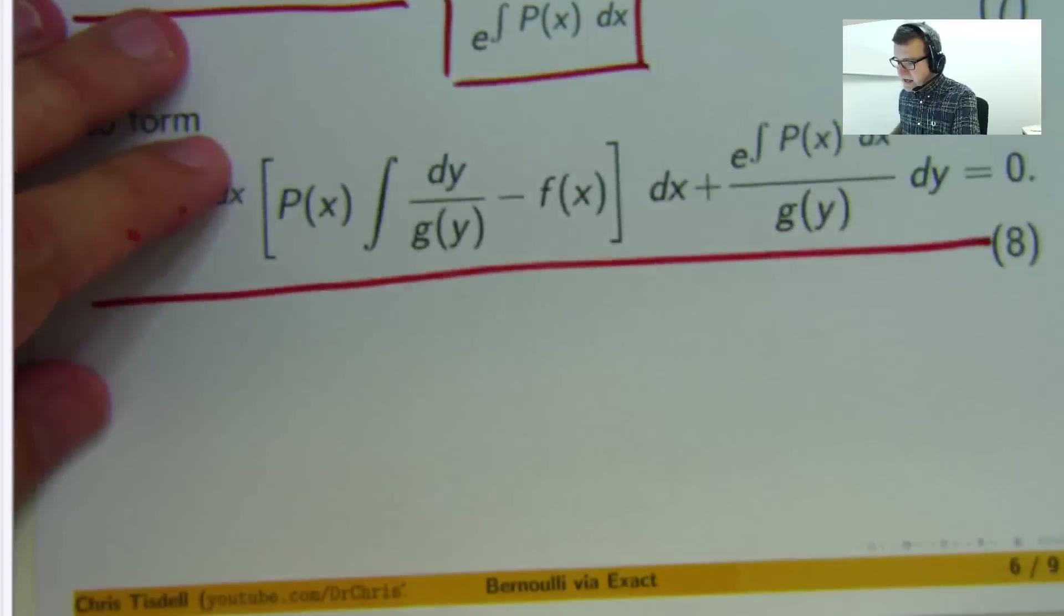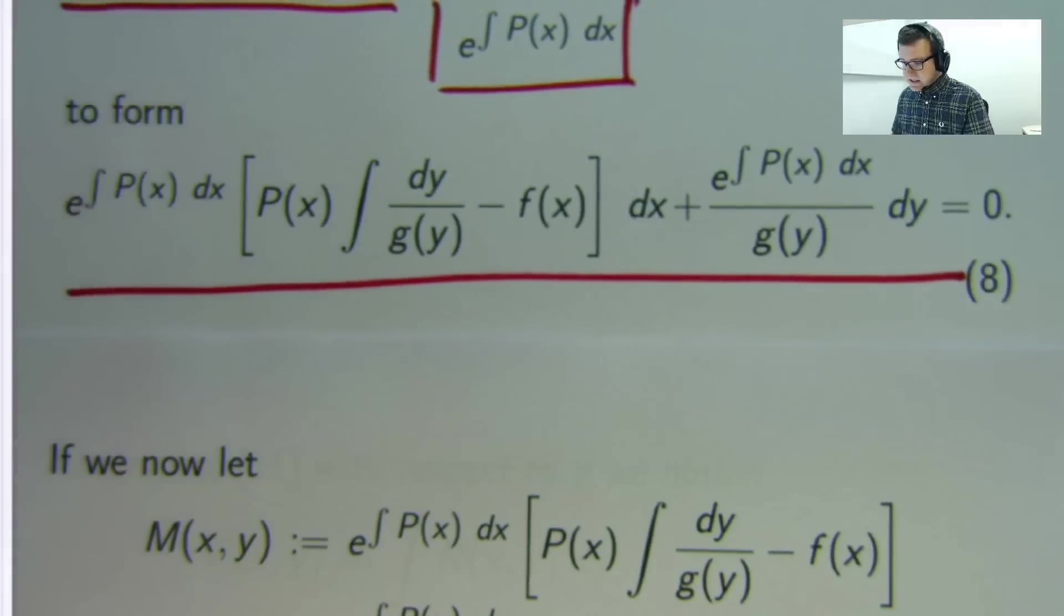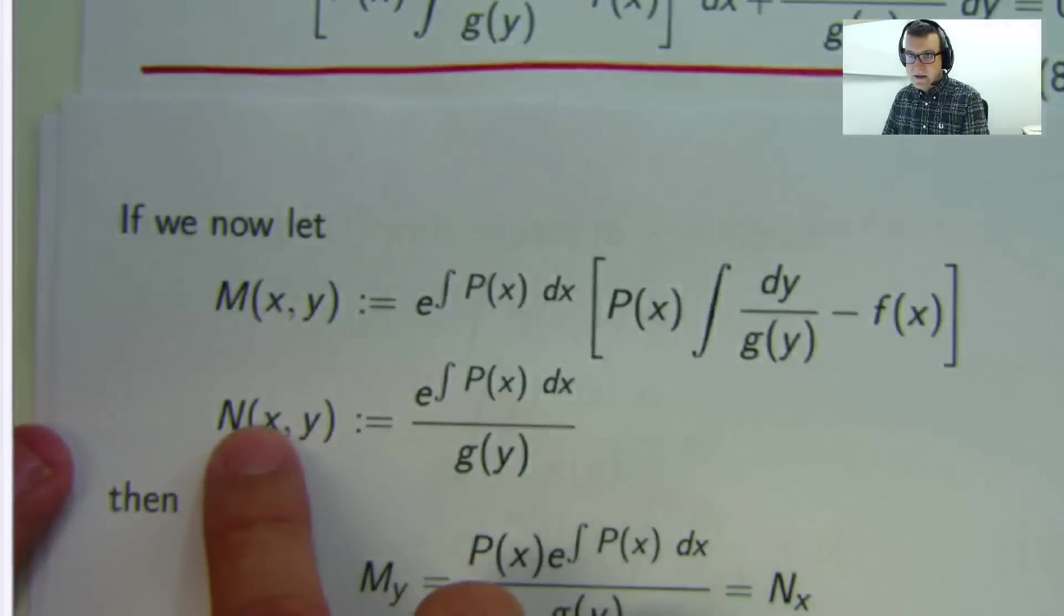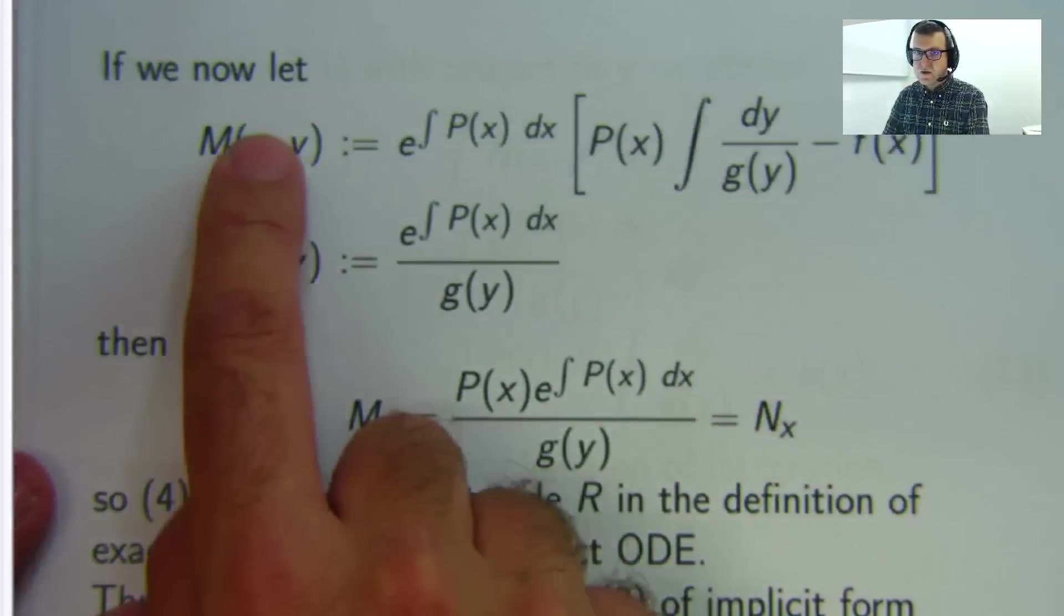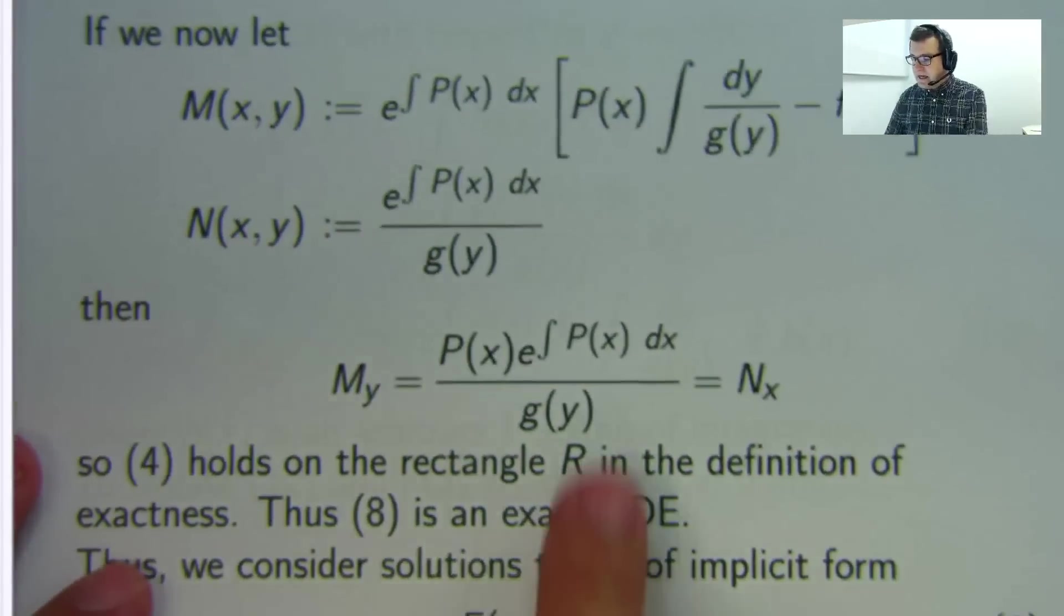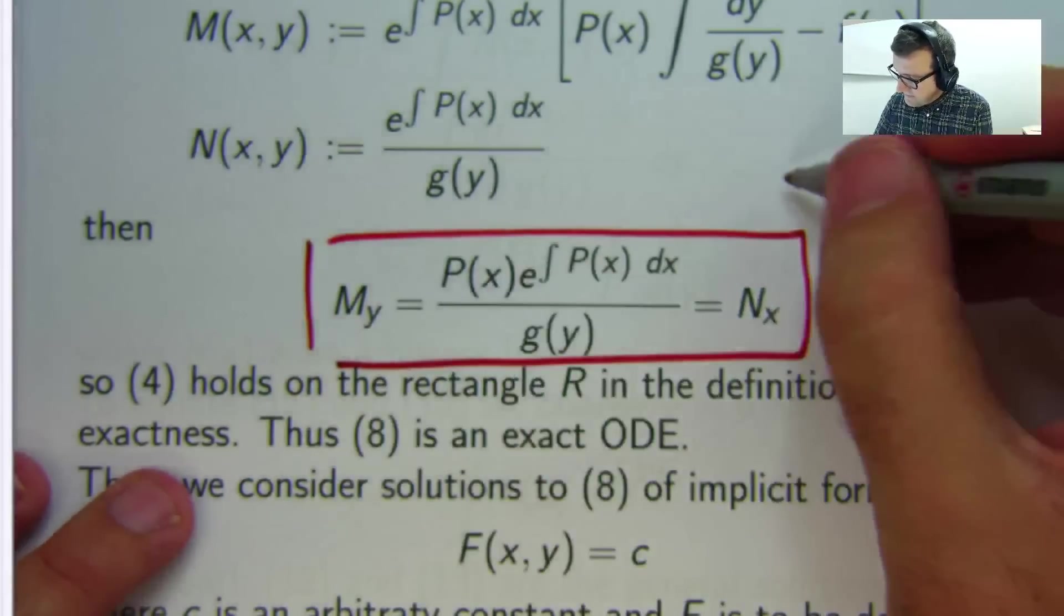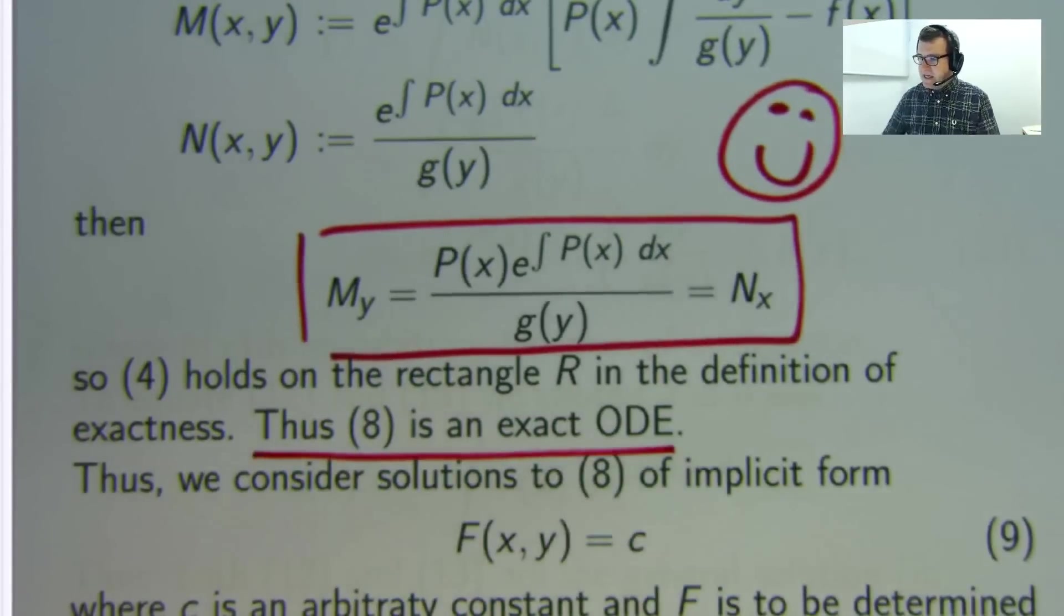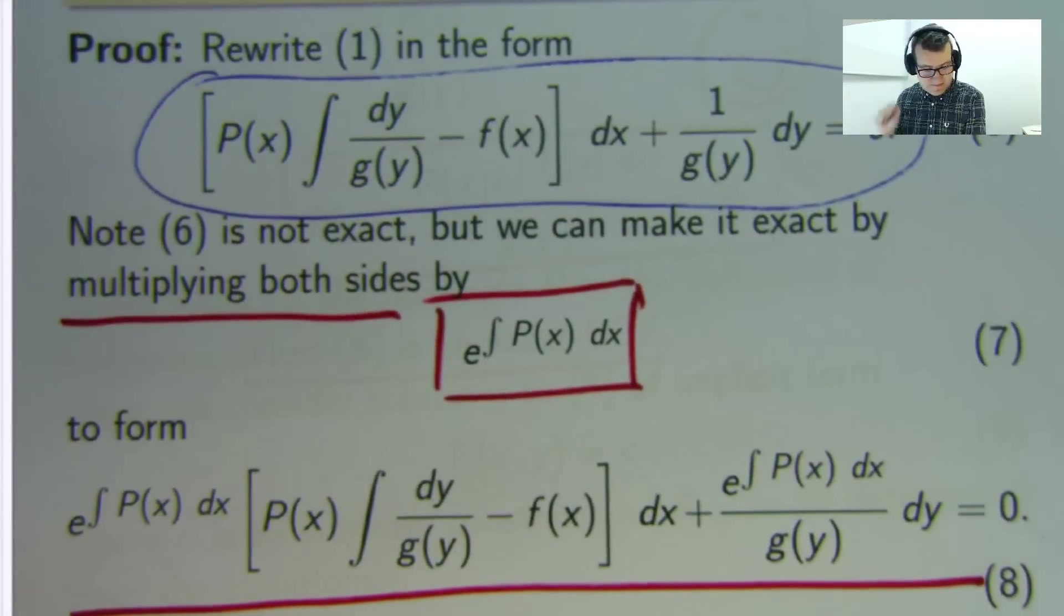What we would do now is go okay well is eight exact. So you would let m be this part here, n be this part here and then you would test for exactness. You compute the partial derivatives m sub y and n sub x and you get lo and behold equality. Brilliant. So what that means is our modified ODE, this big mess down here, is exact. Awesome.